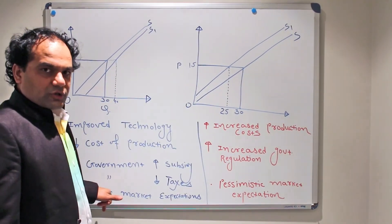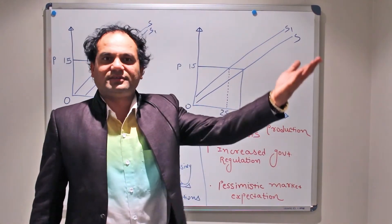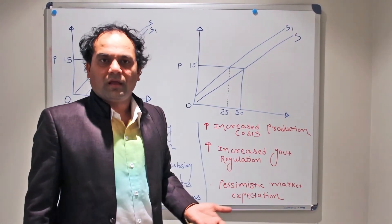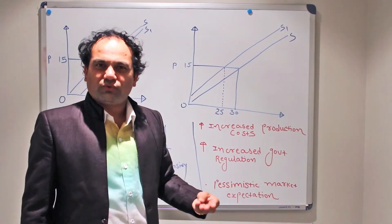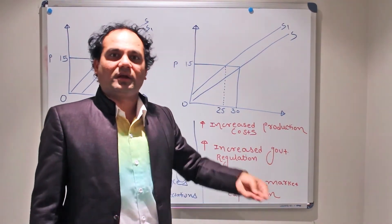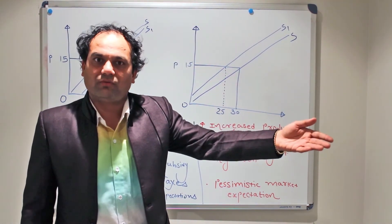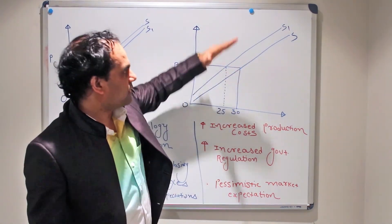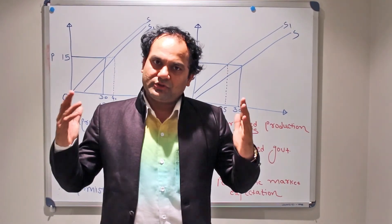Third: pessimistic market expectations — the opposite of optimism. If you think prices are going to fall down in the near future, you have pessimism about the market. You will then be forced to sell more units and supply more to the market even at lower prices, because you fear prices may fall further. That will also move the original supply curve to its left.